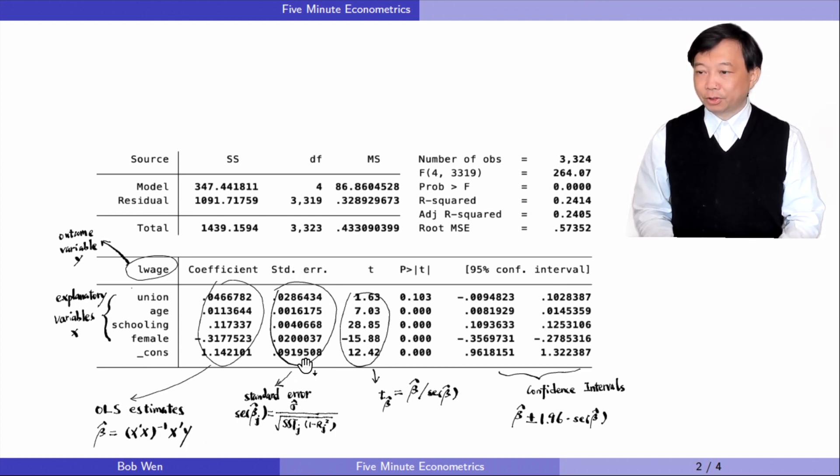The standard errors of the estimates are in the SE column. It equals sigma hat divided by the square root of the total sum of squares of the corresponding explanatory variable times 1 minus R squared. The R squared is from the regression of this explanatory variable on all other explanatory variables.